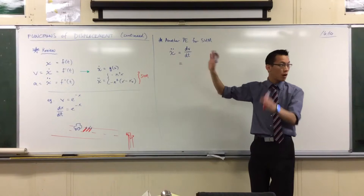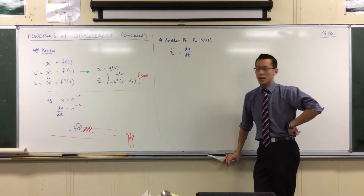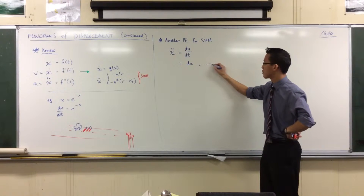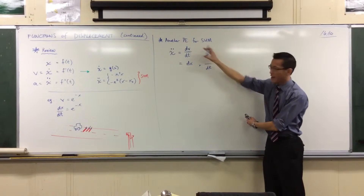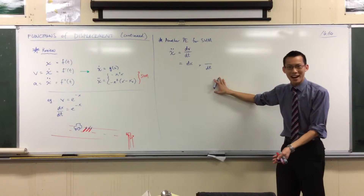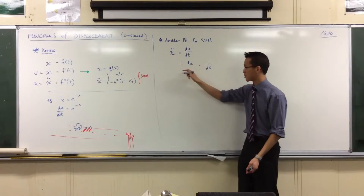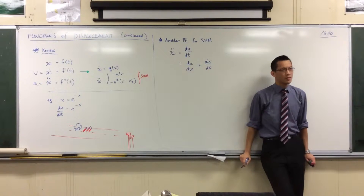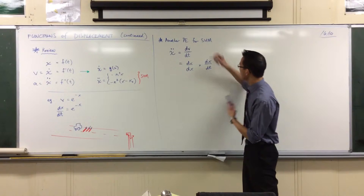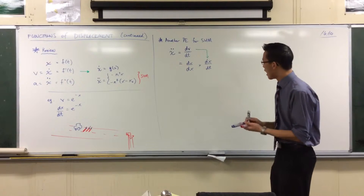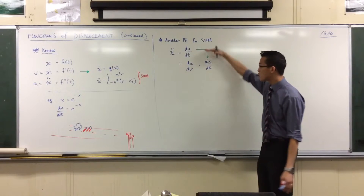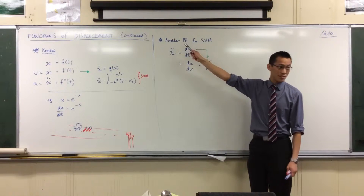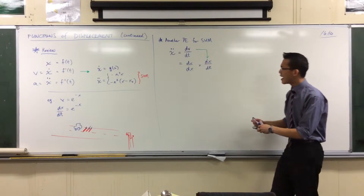dv/dt is what you get after chain rule has cancelled two derivatives down to one. What would be the preceding line? You'd have dv/something times something/dt — that's the chain rule line. When you write it like this, you realize there aren't many choices for what goes in the middle. You can't put acceleration there; your only alternative is displacement x. So the chain rule gives us dv/dx times dx/dt.